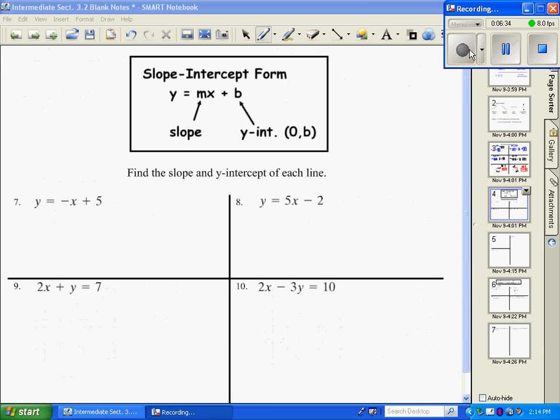Next, we're going to be talking about slope intercept form, which is y equals mx plus b. The m represents the slope, and it's always the value in front of the x. And then your y intercept is your b. The y intercept is represented as an ordered pair. Always 0, and then whatever your b value is. So in number 7 through 12, 10, we want to find the slope and the y intercept.